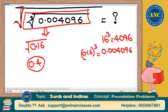16 cube = 4096 — all such calculations have been discussed in the speed maths sessions on how to find the square and cube of a number.